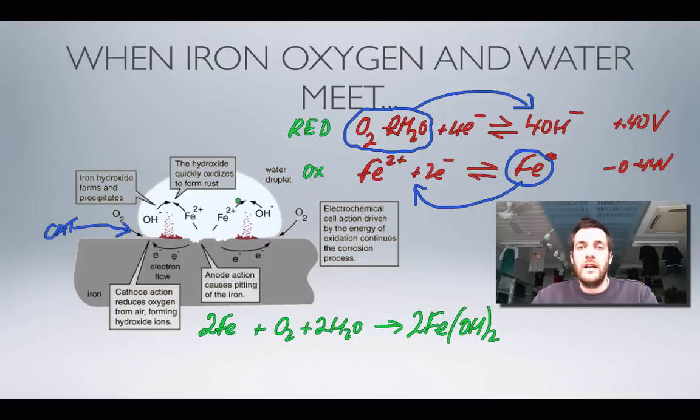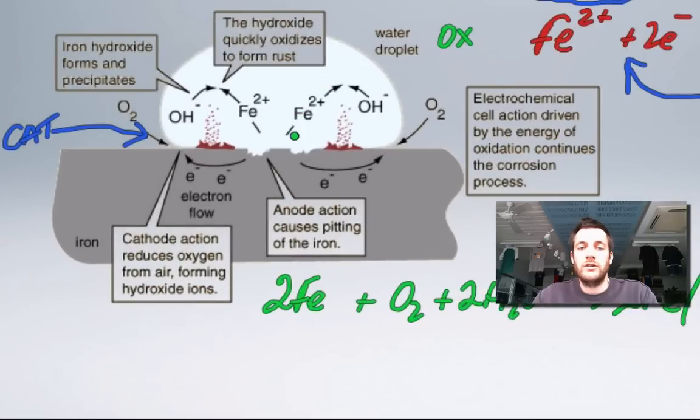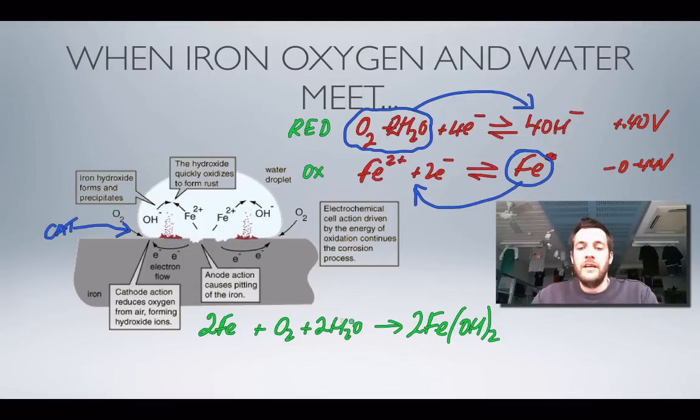But they're forming an insoluble precipitate, so 2Fe(OH)2. We've got all the features of an electrochemical cell there: reduction, oxidation, a cathode and an anode, a wire in our external circuit, a salt bridge carrying ions around. These are the products of this redox reaction.